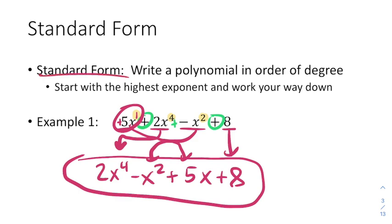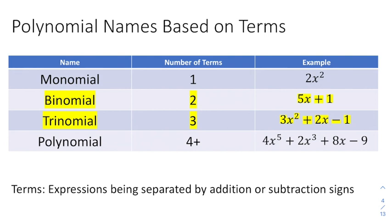We've now rearranged this expression to be in standard form. Standard form is the acceptable way to finish problems. Based on the number of terms, we have different names for polynomials. If there's one term with no addition signs, that's called a monomial. If there are four or more terms, we call that a polynomial — they're really all polynomials, but we stop giving special names after four.